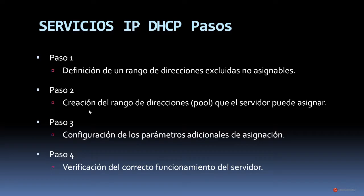En el segundo paso tenemos la creación del rango de direcciones, también denominada pool, que el servidor puede asignar. Estas ya sí son direcciones que el servidor DHCP va a poder asignar al cliente. En el paso 3 tenemos la configuración de los parámetros adicionales de asignación, como otro tipo de direcciones, por ejemplo de DNS, también la dirección del gateway, etc. Y en el último paso, paso 4, la verificación del correcto funcionamiento del servidor DHCP.